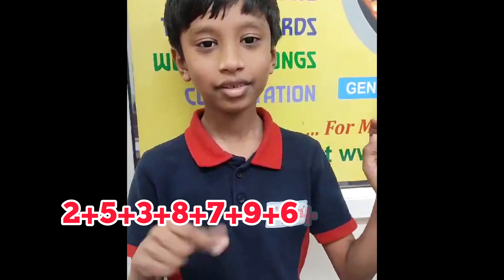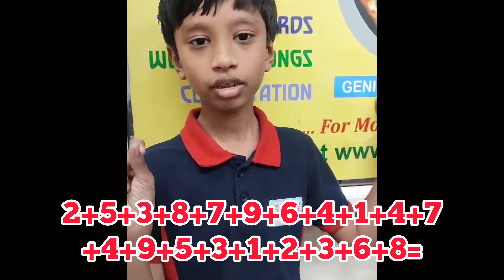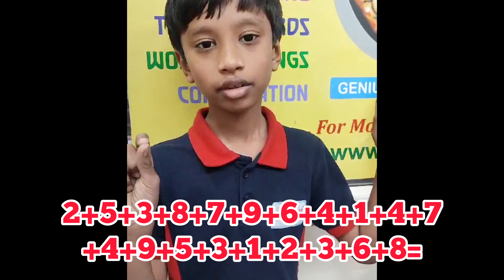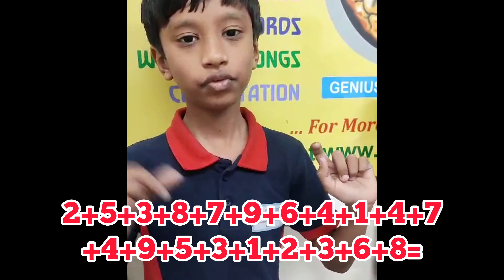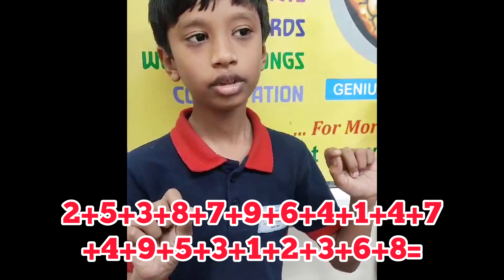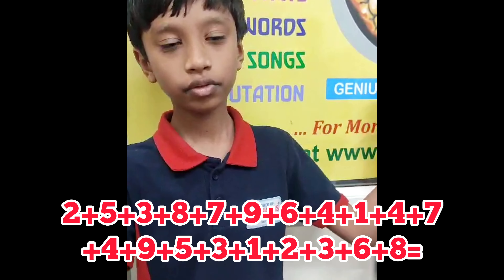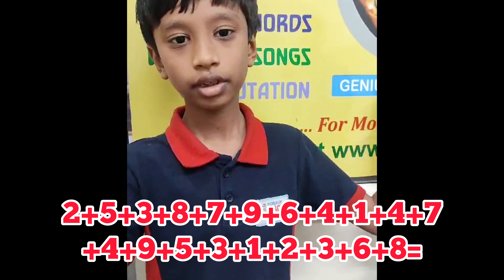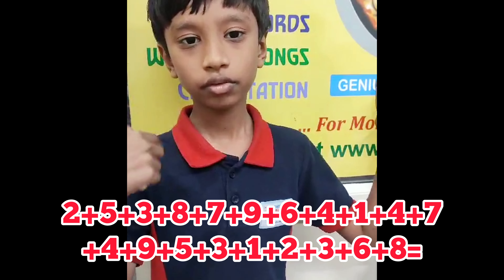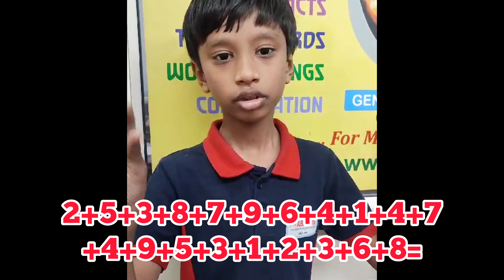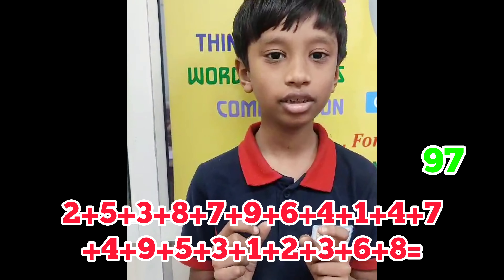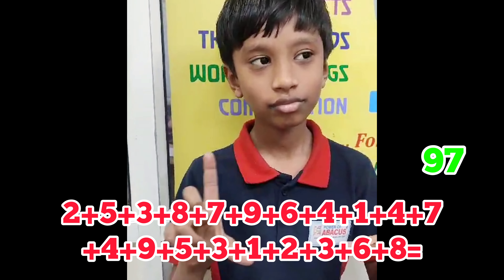1 digit 20 row. 2, 5, 3, 8, 7, 9, 6, 4, 1, 1, 4, 7, 4, 9, 5, 3, 1, 2, 3, 6, 8. That is 97. Very good. Next.